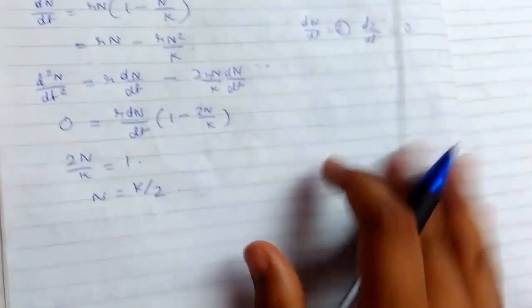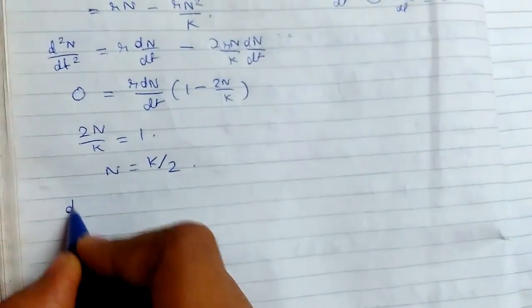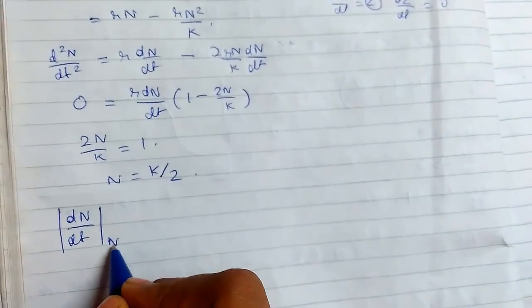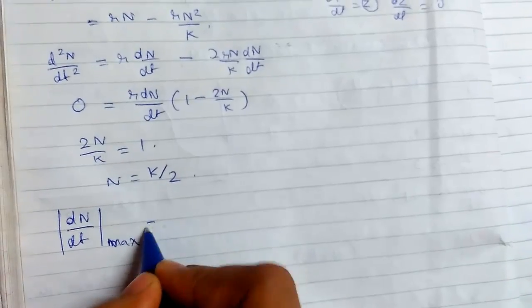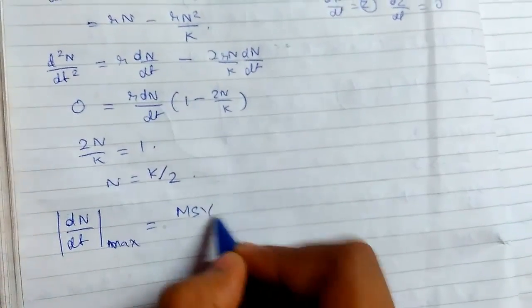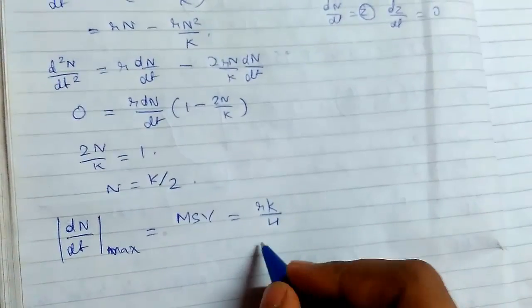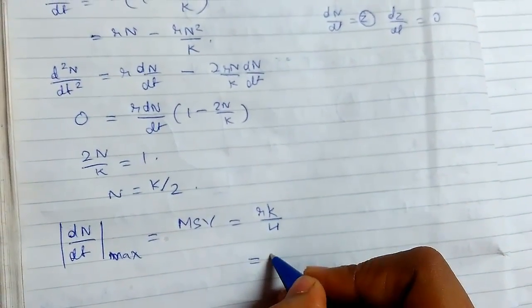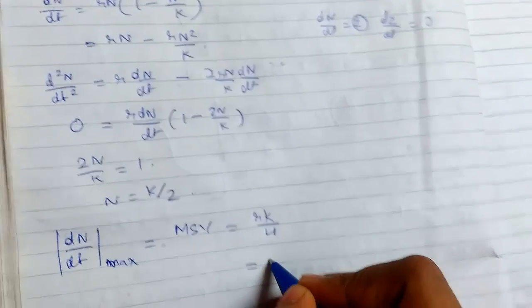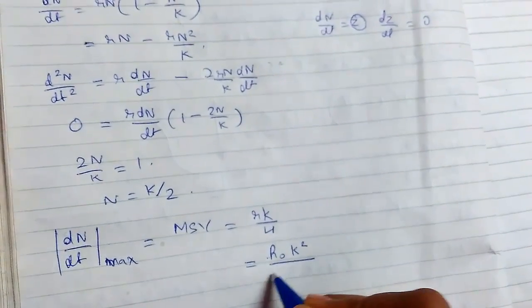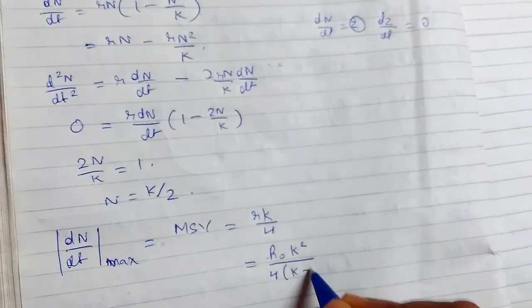So now we will just see the maximum value, what it is. dN/dt at N equals K/2, that is max. This will be MSY, that equals rK/4. Now putting in the original equation, this will be r(K²/4K) minus N₀.